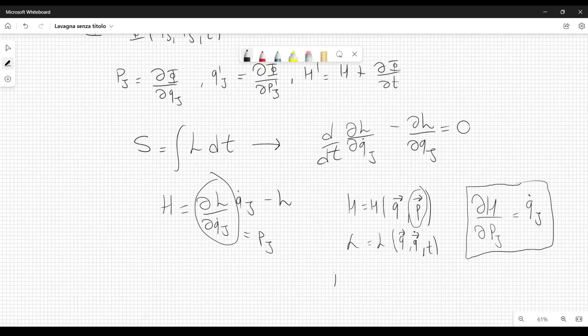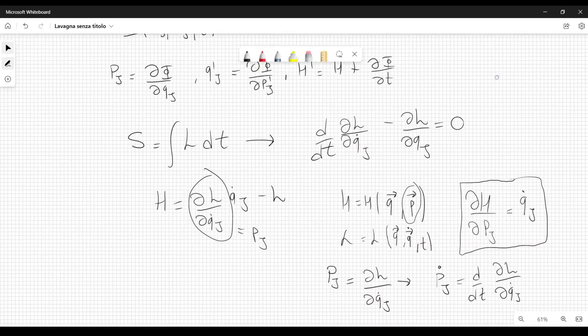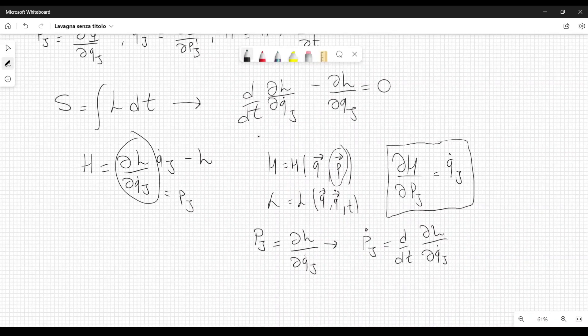Then we also know the other equation, which is p j equal to dL over dq dot j. Now, if we take the derivative with respect to time of this, we have p j dot equal to d over dt dL over dq dot j, and d over dt dL over dq dot j from Lagrangian equations can be written as